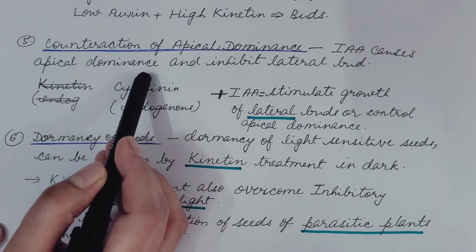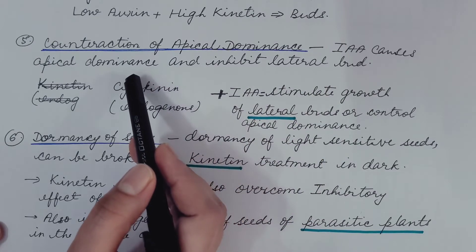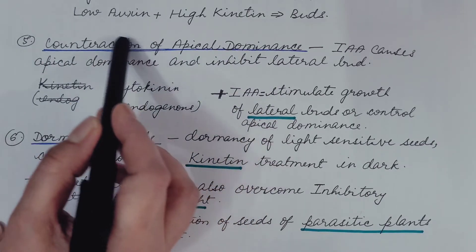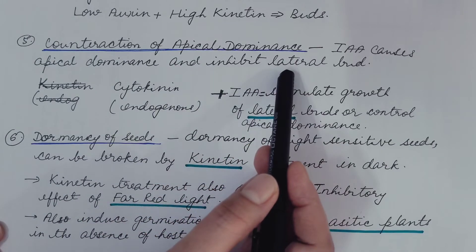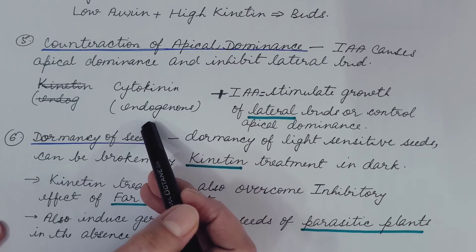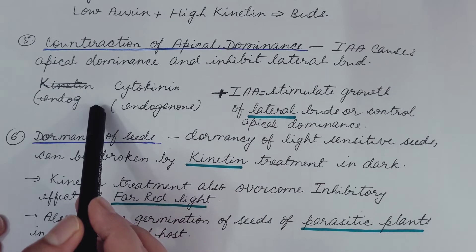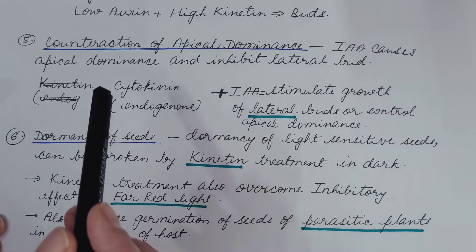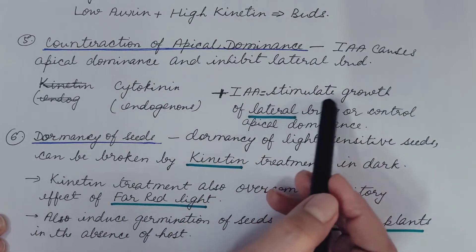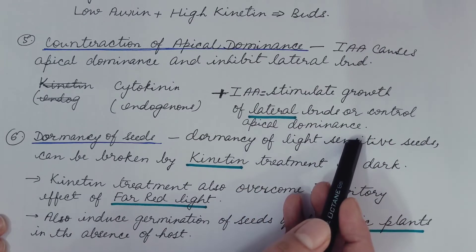Low auxin concentration and high kinetin concentration results in the development of buds. Fifth is counteraction of apical dominance. We have already seen that auxin causes apical dominance and inhibits lateral buds. In culture, if auxin is added, it results in apical dominance — causing growth of the apical bud but inhibiting lateral buds. If kinetin is added, it counteracts apical dominance, inhibiting growth of the apical bud and allowing growth of lateral buds. Naturally, there is a balance between apical and lateral bud growth due to the balance in concentration of endogenous cytokinin and indole acetic acid.